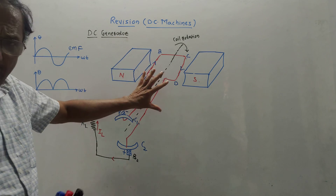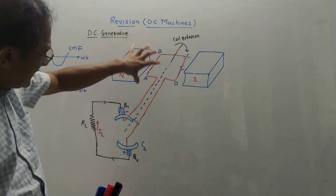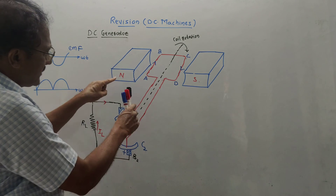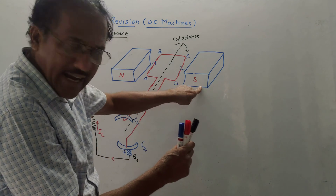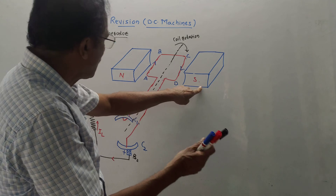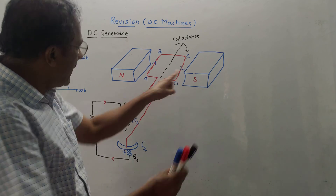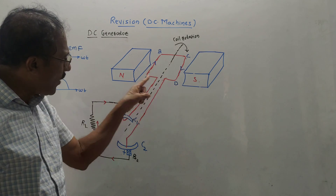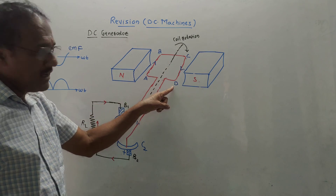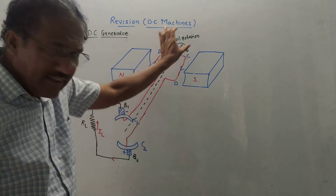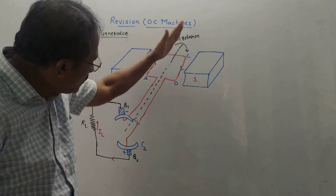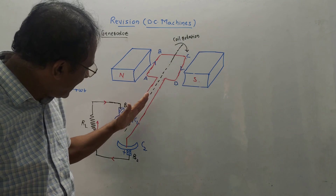What are the different parts? How is the construction of DC generator? It consists of a permanent magnet made by N and S, that is North Pole and South Pole. It consists of a coil A, B, C, D. This coil is connected to one prime mover which is not shown in this diagram.